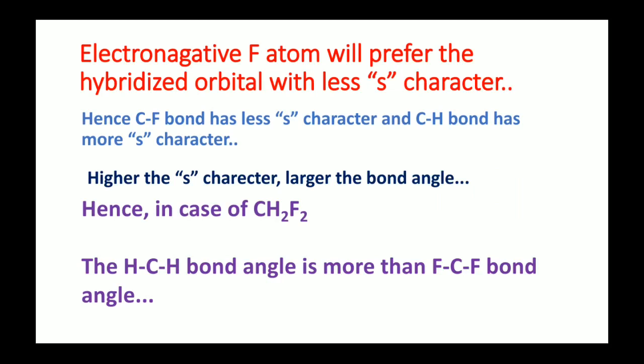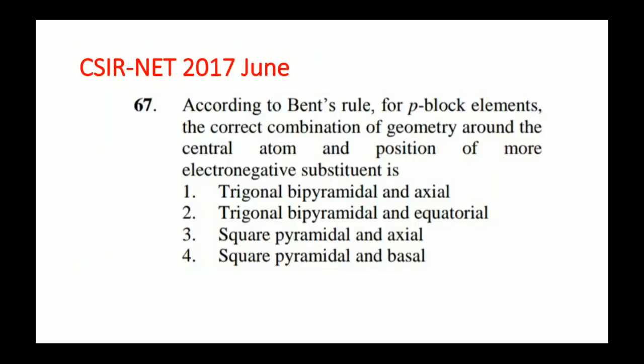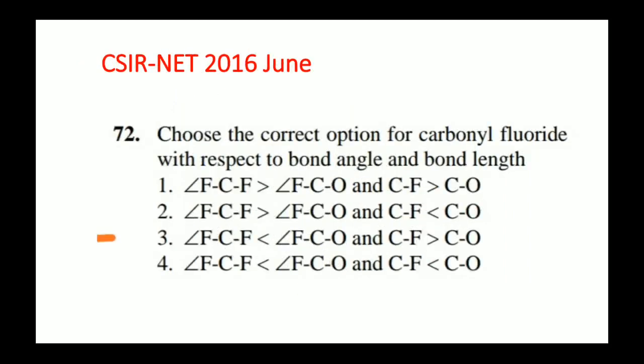Now for CSIR-NET questions. In CSIR 2017, a 4-mark question asked: according to Bent's Rule for a p-block element, what is the correct combination of geometry around the central atom and position of the more electronegative substituent? Phosphorus is a p-block element with sp³d hybridization and trigonal bipyramidal geometry, where the two electronegative fluorine atoms prefer the axial position. Hence option 1 is correct, showing trigonal bipyramidal geometry with fluorines in axial positions.